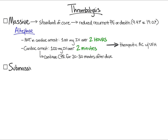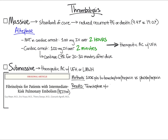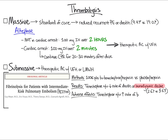All patients with submassive PE should receive therapeutic anticoagulation with either unfractionated heparin or low molecular weight heparin. However, the decision to administer thrombolytics is less straightforward. The PYTHO trial in 2014 randomized 1,006 patients with submassive PE to tenecteplase, a thrombolytic, plus heparin or placebo plus heparin. The tenecteplase group had a lower rate of death or hemodynamic decline compared to placebo, 2.6% versus 5.6%, but this difference was driven almost entirely by reduced rates of hemodynamic decline. In addition, the tenecteplase group had a higher rate of extracranial bleeding and stroke.